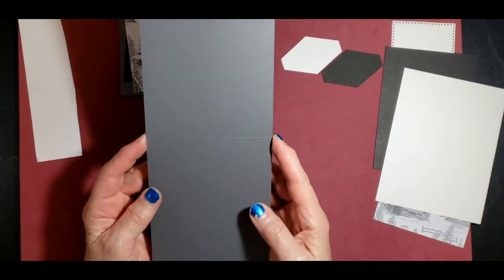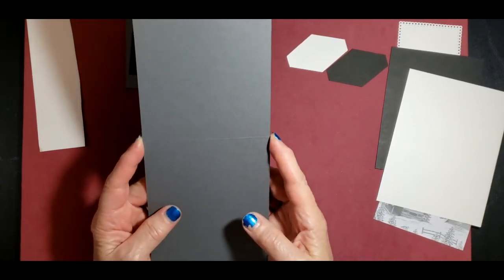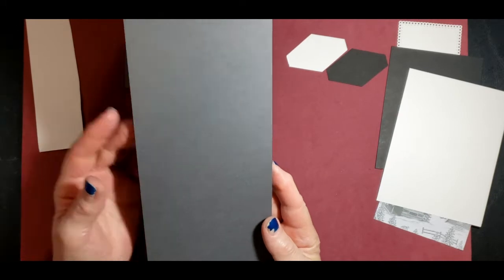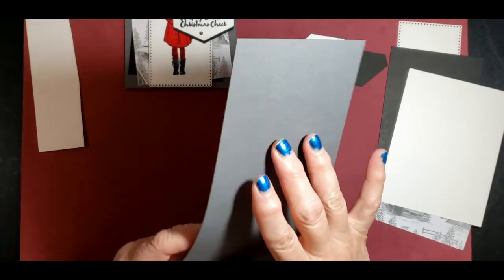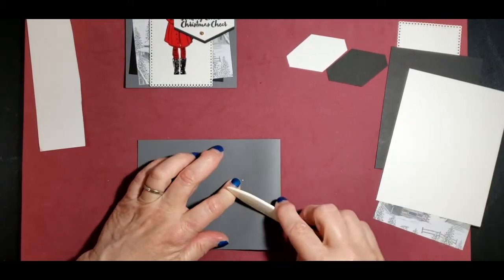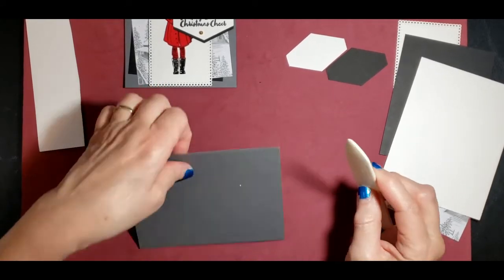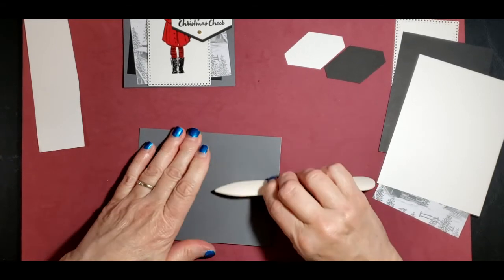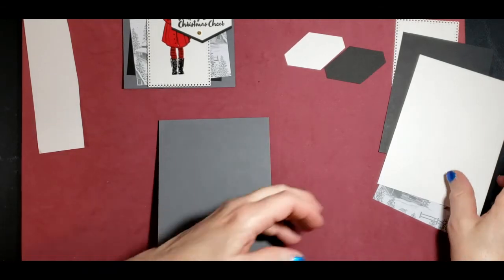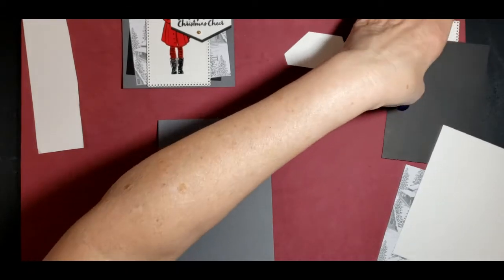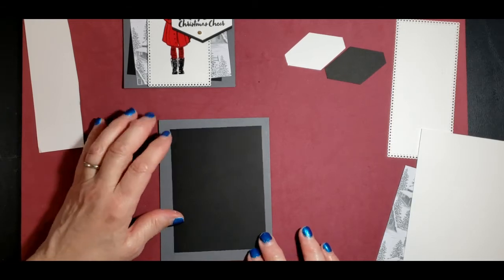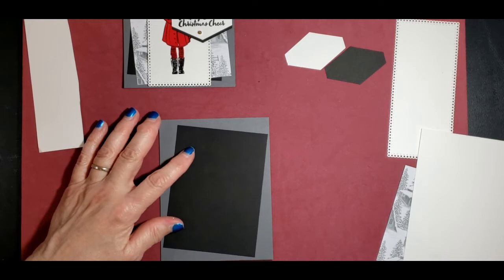We've got our five and a half by eleven card base and it's scored at five and a half. I'm going to just fold it there and I'll use my bone folder so I can get a nice crisp edge. Then I'm going to flip it over to make sure that I get a nice crisp edge on both sides. That helps get it crisp.